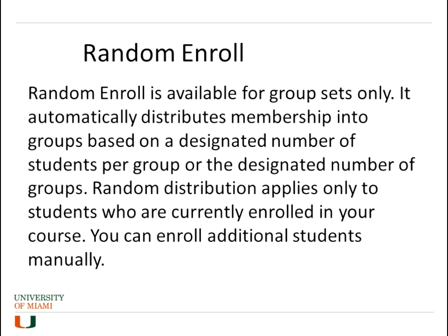Random enroll is only available for group sets. It automatically distributes memberships into groups based on a designated number of students per group or the designated number of groups. A random distribution applies only to students who are currently enrolled in your course, but you can enroll additional students manually.